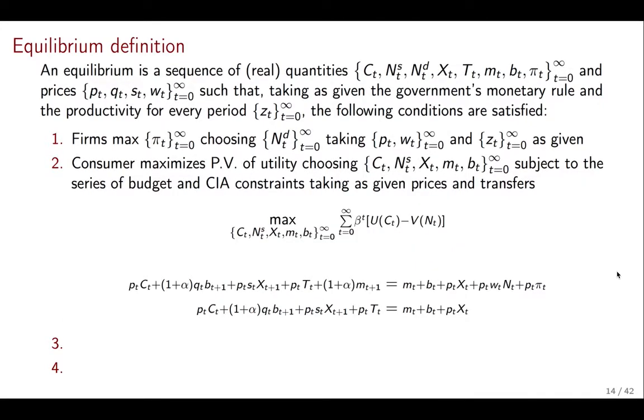Then the next thing is we have our consumers. They maximize the present value of utility. They are going to choose consumption and labor. They also have to choose their assets: real bonds, nominal bonds, and money. And they are going to be subject to a series of budget and cash-in-advance constraints. And they are going to take as given prices and transfers. And so their problem is to choose all those variables to maximize the present discounted value of utility subject to the sequence of these constraints. So they don't have two constraints—this is important for us to understand going forward. They actually have two constraints for every period. There are infinitely many periods, so they have infinitely many constraints. But in any given period, they have only two.